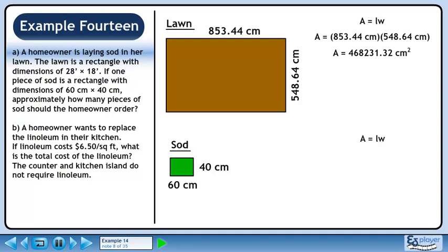Now we'll find the area of the sod. Plug in the length and width of a piece of sod. The area is 2400 square centimeters.